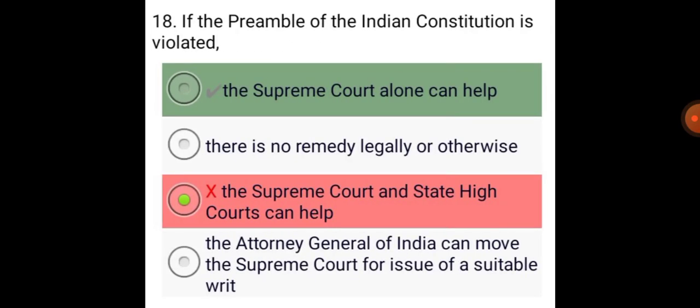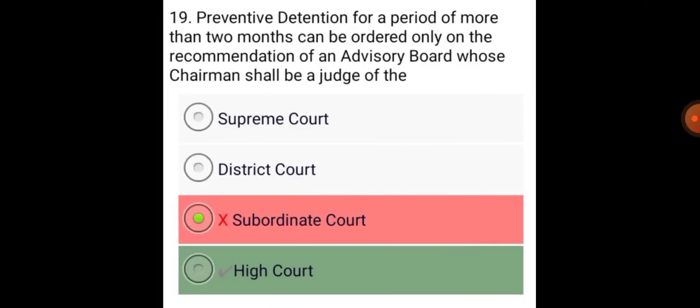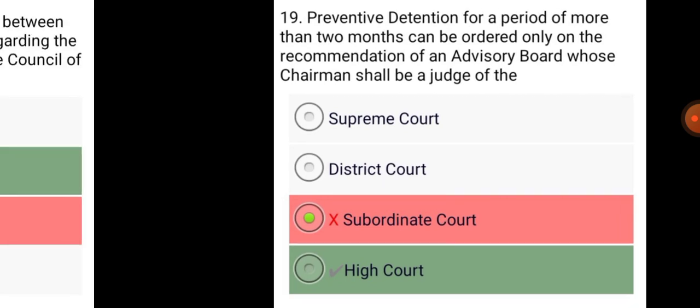If the preamble of the Indian Constitution is violated, the Supreme Court alone can provide help. Preventive detention for a period of more than two months can be ordered only on the recommendation of an advisory board whose Chairman shall be a Judge of the High Court.